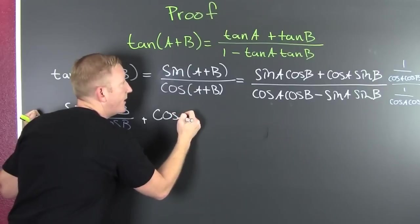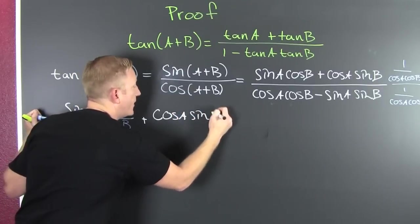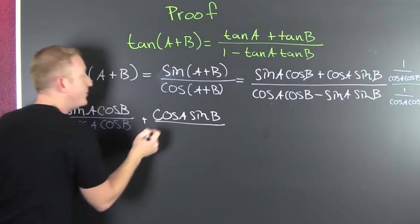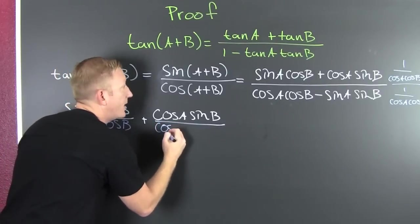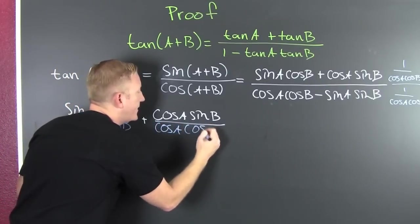That's the cosine of A, the sine of B, and that's going to be divided by the cosine of A, cosine of B.